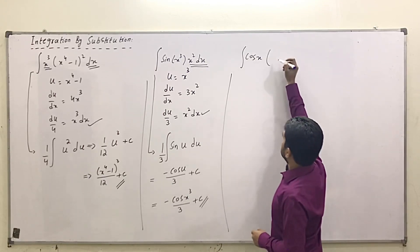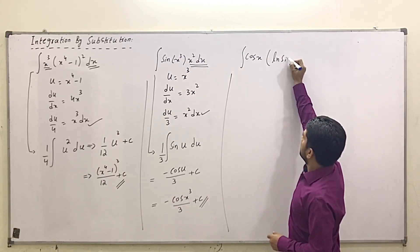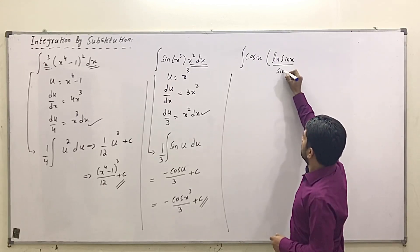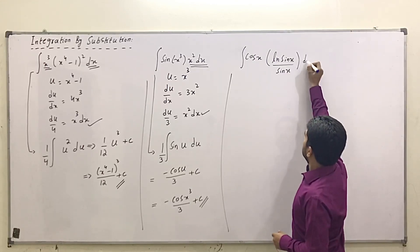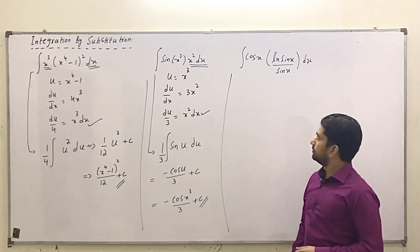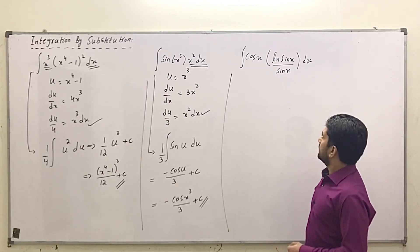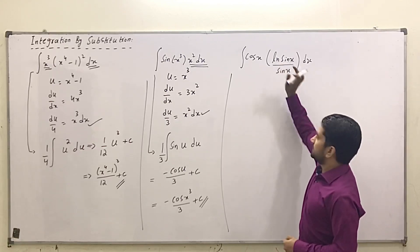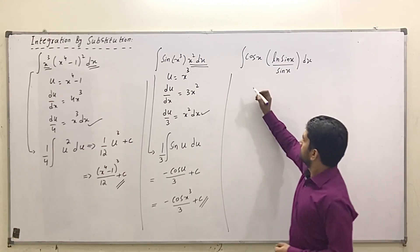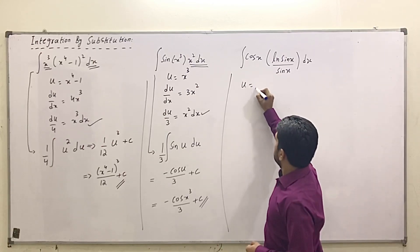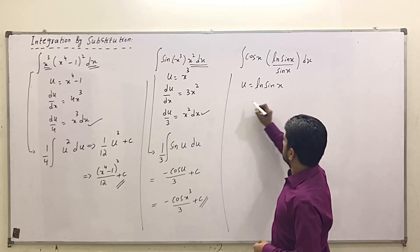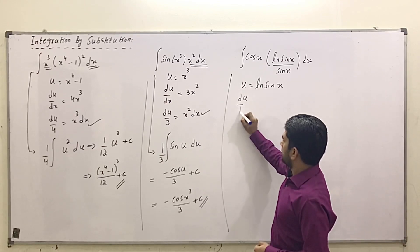Let's do one more example: integrate cos(x) · ln(sin x) / sin(x) dx. Again we need to identify u. If I select u = ln(sin x), then its derivative will be present in the integral. So u = ln(sin x), and we find du/dx.